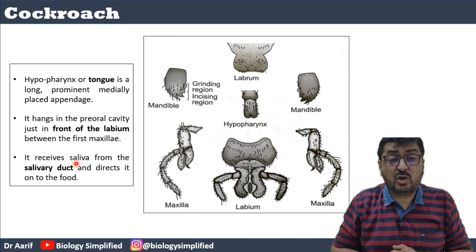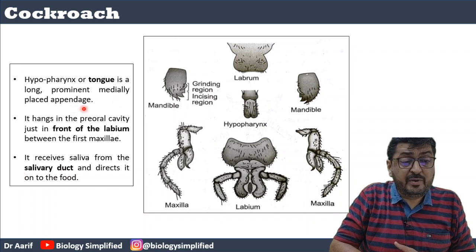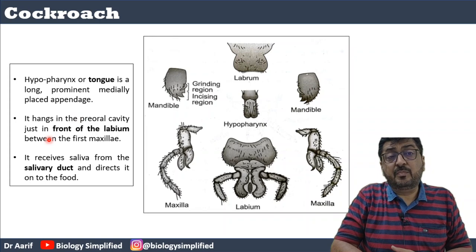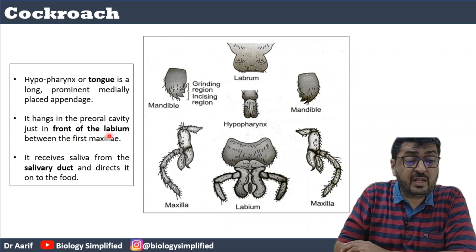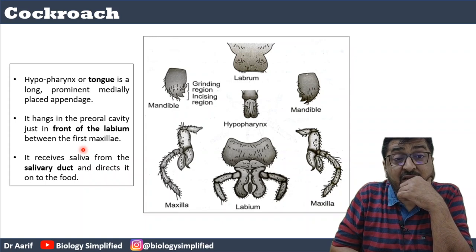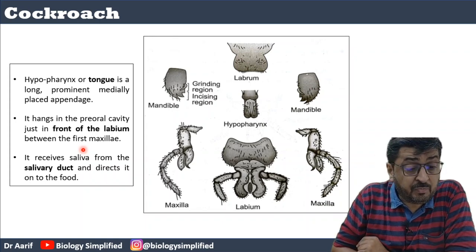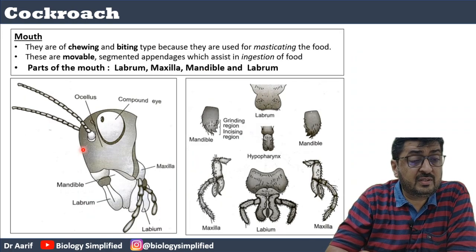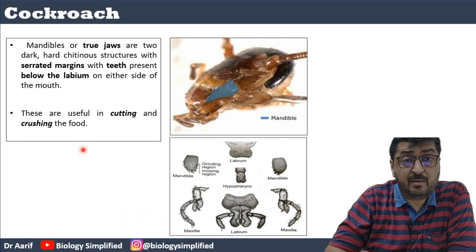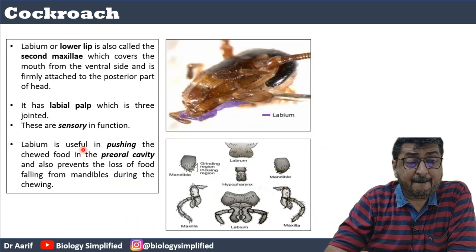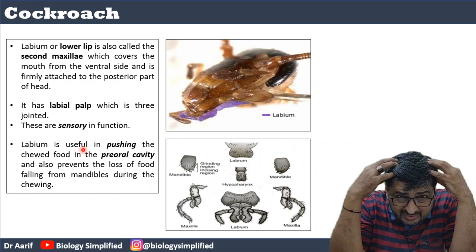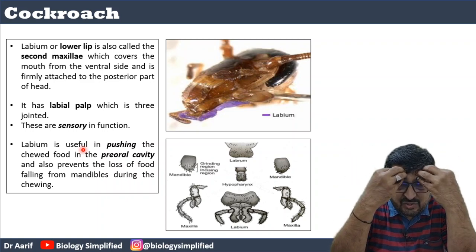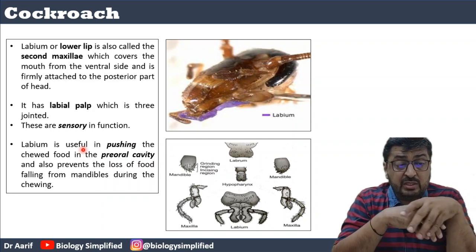The last part is the hypopharynx, or tongue — a long, prominent, medially placed appendage. It hangs in the pre-oral cavity, which is the cavity just in front of the mouth. It is situated just in front of the labium and behind the first maxilla, and it receives saliva directly from the salivary duct.